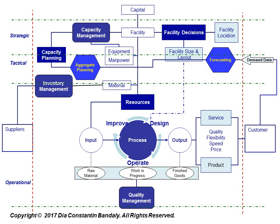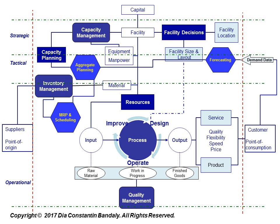Operations managers then break down the aggregate plan into detailed short-term schedules of material requirements, workforce, and equipment utilizations using MRP and scheduling techniques. An ideal supply chain management links the point of consumption with the point of origin through at least one integrated process or OM tool. Information sharing of demand data is a typical example of such integration. Hopefully now you'll have a better understanding of what operations management is.